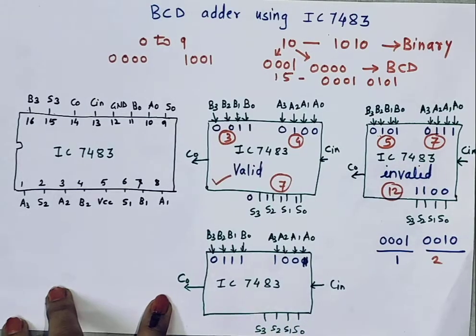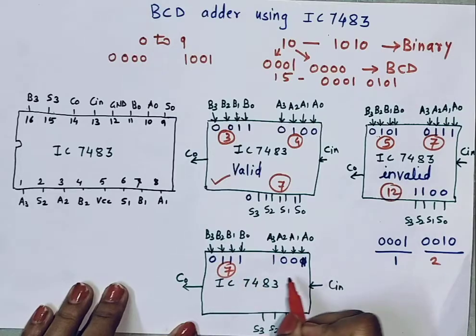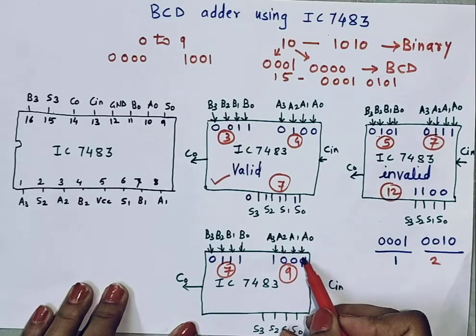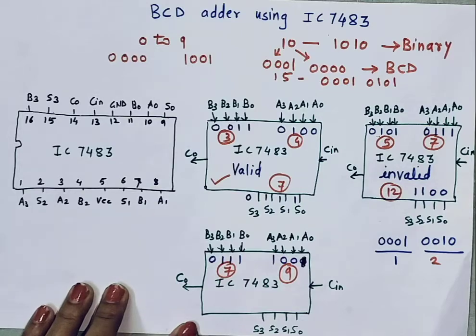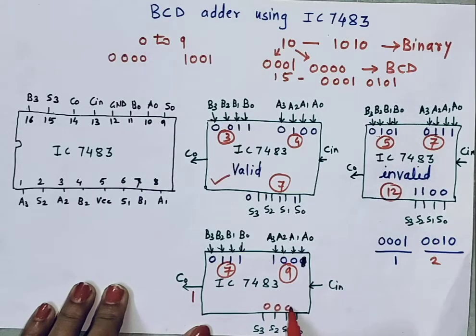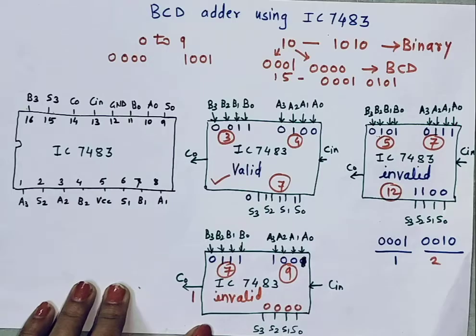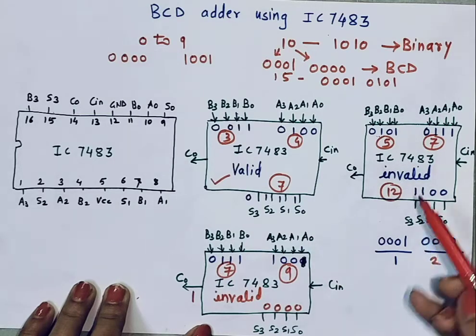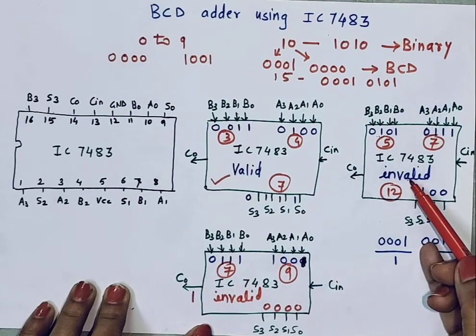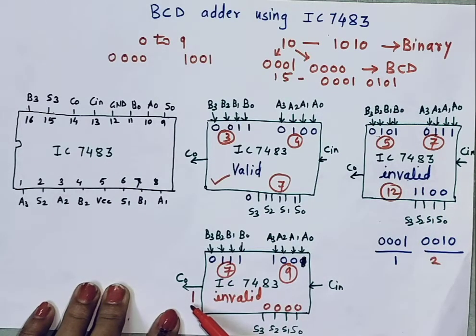The third condition: suppose my first number is 7 and the second number is 9 (1001). Then 9 plus 7 is 16. It will generate carry 1 and the sum is 0000. The sum appears to be valid BCD, but it is not the BCD equivalent of 16. So carry is generated — this is again an invalid answer. We need correction when the answer is an invalid BCD number or when a carry is generated.